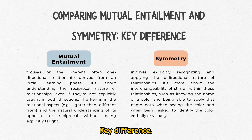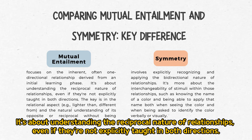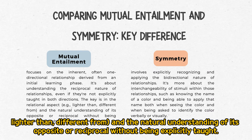Key difference: in mutual entailment, the focus is on the inherent, often one-directional relationship derived from an initial learning phase. It is about understanding the reciprocal nature of relationships even if they are not explicitly taught in both directions. The key is in the relational aspect — for example, 'lighter than' or 'different from' — and the natural understanding of its opposite or reciprocal without being explicitly taught.